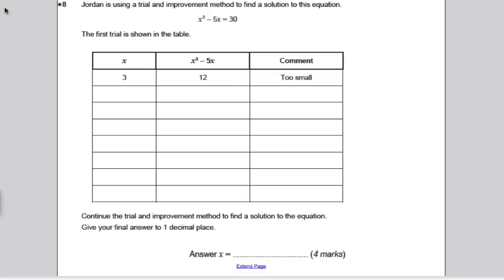Okay, so, you should have had a go yourself by now. Another very standard question. Jordan's using trial and improvement to find a solution to the equation x cubed minus 5x is equal to 30. They've drawn the table out for you. They ask you to use trial and improvement to find your answer to 1 decimal place. Again, really kind, done the first bit of working for you. So, when they put in 3 into that equation, they got 12, which was too small. I'm going to obviously try 4 now.